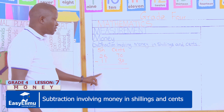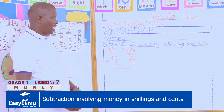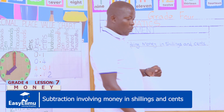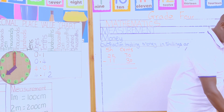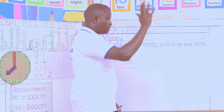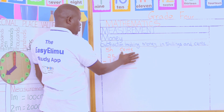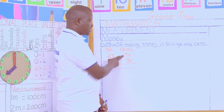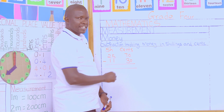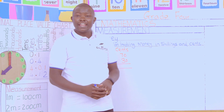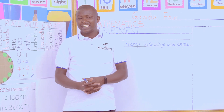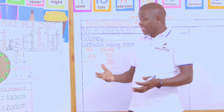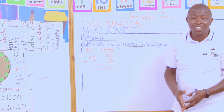Alignment is very key, and remember one shilling is equivalent to 100 cents. Now when we are subtracting, remember to start from your right side. So in our case, we start from the cents: 70 cents take away 30 cents.